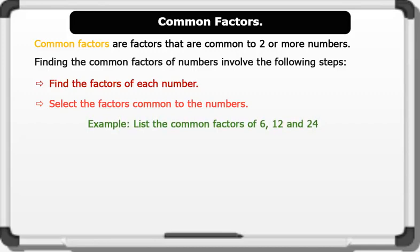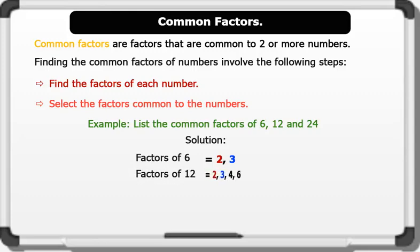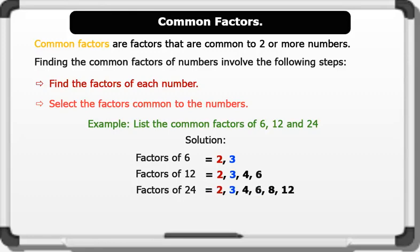List the common factors of 6, 12, and 24. Solution. We first find the factors of each number. Therefore, the factors of 6 are 2 and 3. The factors of 12 are 2, 3, 4, and 6. The factors of 24 are 2, 3, 4, 6, 8, and 12.